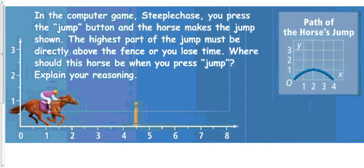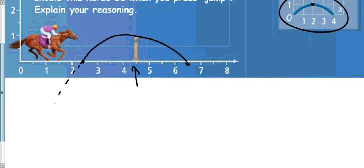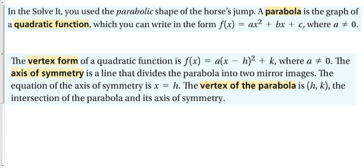Let's look at this computer game called Steeplechase. You press the jump button and the horse makes the jump shown on the right. The highest part of the jump must be directly above the fence or you lose time. The highest point on the graph is at x = 2, and the gate is at 4.5, so you should press jump when the horse gets to 2.5. The horse will jump up and come back down to pass the gate.